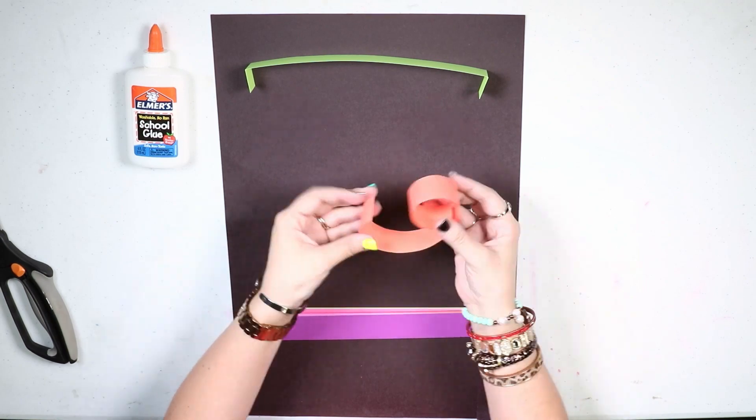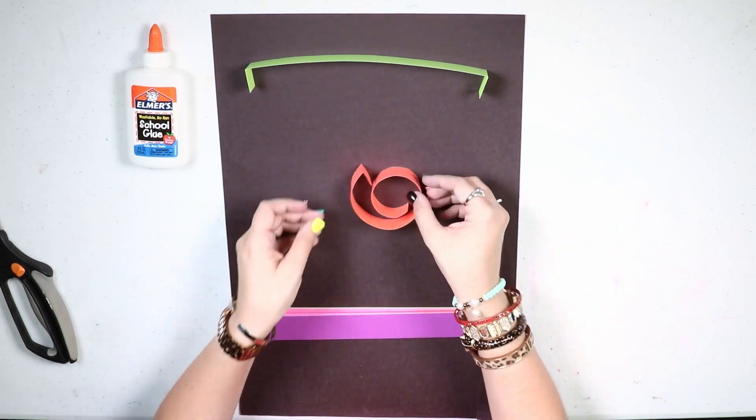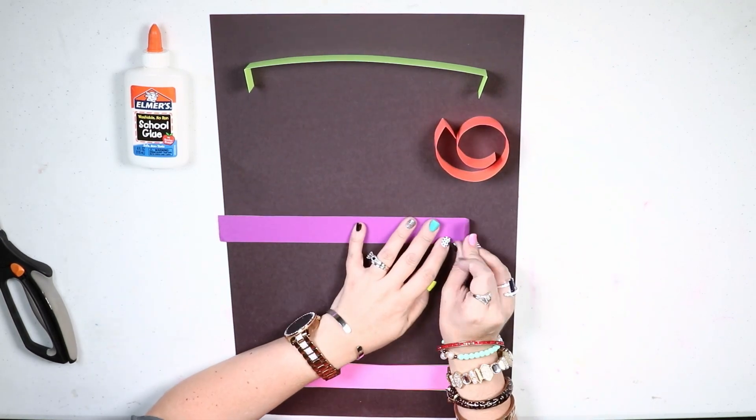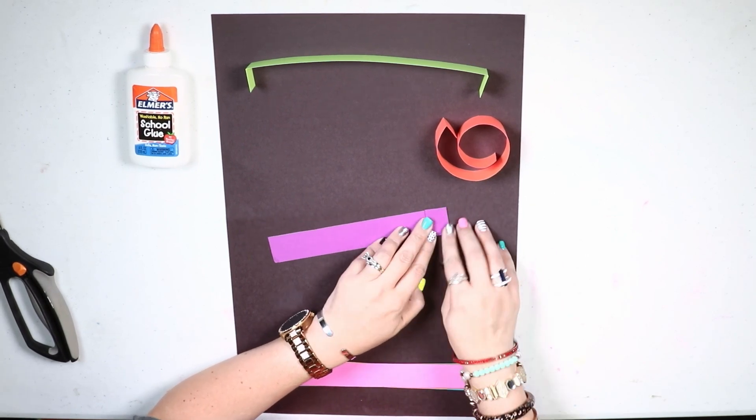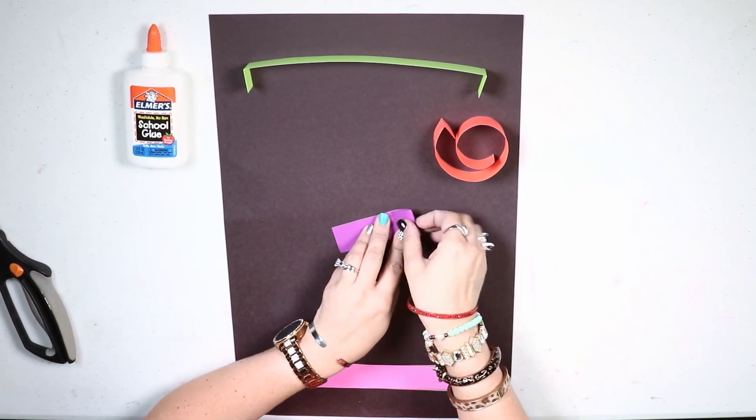The next one I'm just rolling on top of itself and it creates a spiral and I'm always folding a tab on the end. That's going to help you glue your paper to your base, which our base today is the black page.